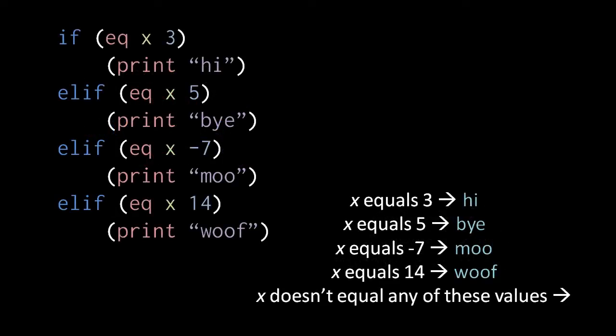We can actually give an if more than one elif clause, effectively adding on more mutually exclusive cases. Here in this example, we start at the top and test the condition of the if itself, and when it's true we print high and then skip over all the elif clauses. Otherwise, we test the condition of the first elif clause, and when that's true we execute its body. Otherwise, we test the condition of the next elif, and so forth. In short, the way this works is that the conditions are tested from top to bottom, and the first one that tests true — its body is the one, and only one, to execute. In the case that none of the conditions test true, then all the bodies get skipped over.